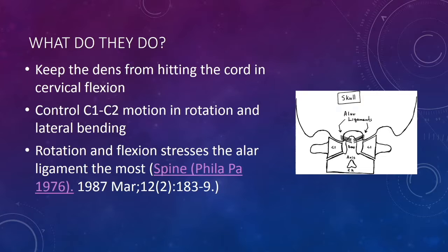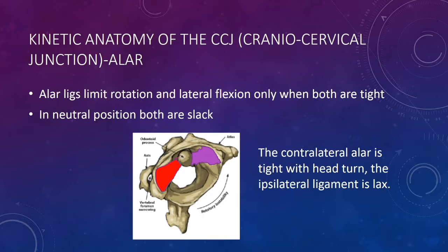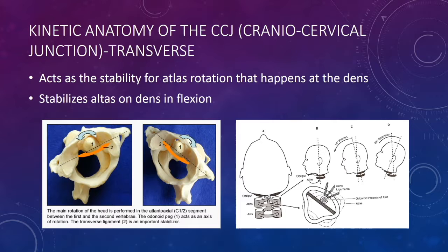What do these ligaments do? The transverse ligament keeps the dens from hitting the cord in cervical flexion. The ALAR controls C1-C2 motion in rotation and lateral bending, and rotation and flexion stress the ALAR the most. The kinetic anatomy is that ALAR ligaments limit rotation and lateral flexion when both are tight, and the contralateral ALAR is tight with a head turn while the ipsilateral is lax. The transverse ligament acts almost like a seatbelt for the dens, preventing it from moving into the spinal cord in flexion, and also serves as a major pivot point as you turn your head.